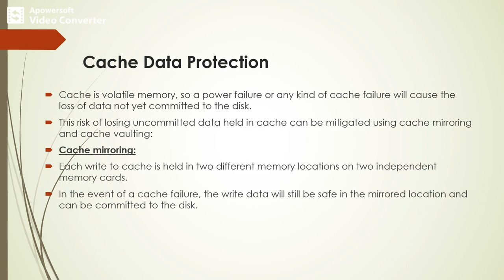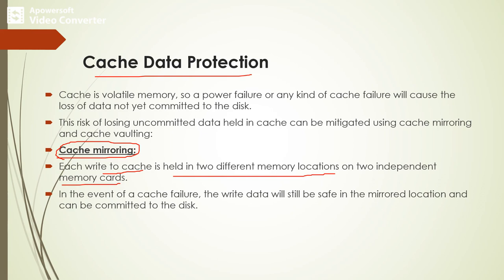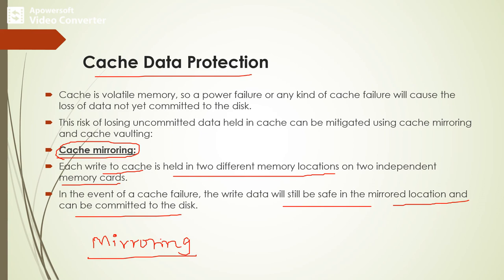Next is cache data protection. Like the RAID concept, mirroring is used to protect data in cache. Each write to cache is held in two different memory locations on two independent memory cards. In the event of a cache failure, the write data will be safe in the mirrored location and can be committed to the disk. During any cache failure, the data can be recovered from the mirrored cache.